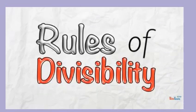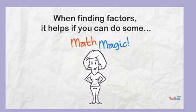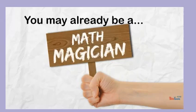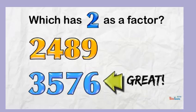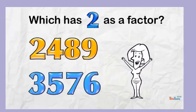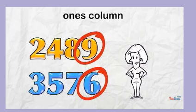Rules of divisibility. When you have to find the factors of a number, it helps to know a little bit of math magic. You may already be a cool math magician and not know it. When you look at these numbers, do you know straight away which one has 2 as a factor? No matter the size of the number, we know if a number is divisible by 2 or not by looking at the very last digit — the ones column.